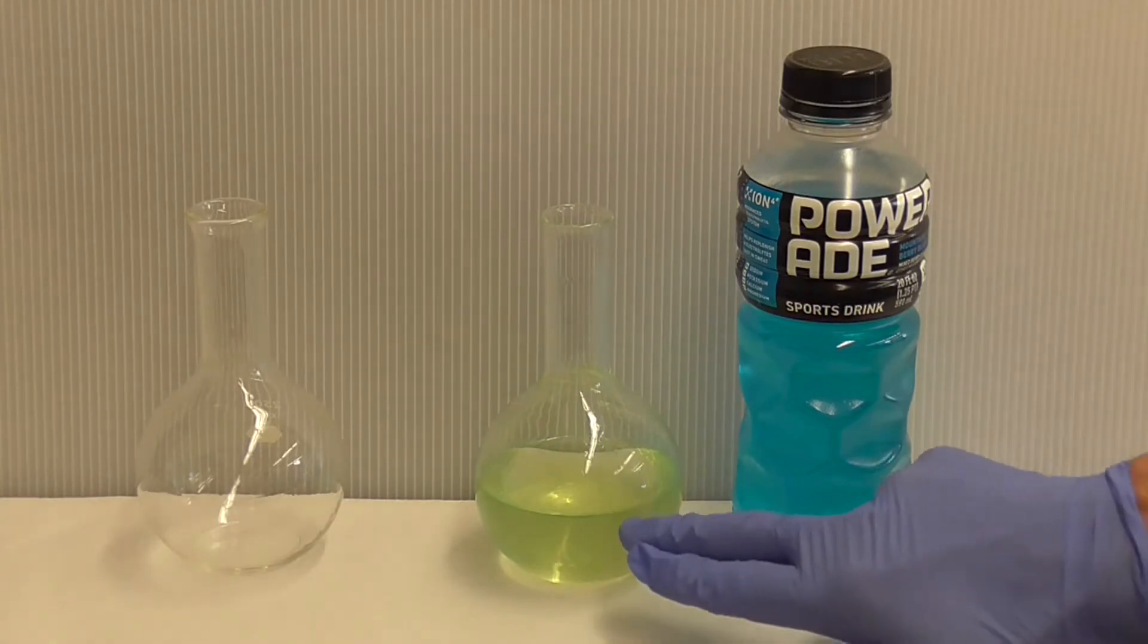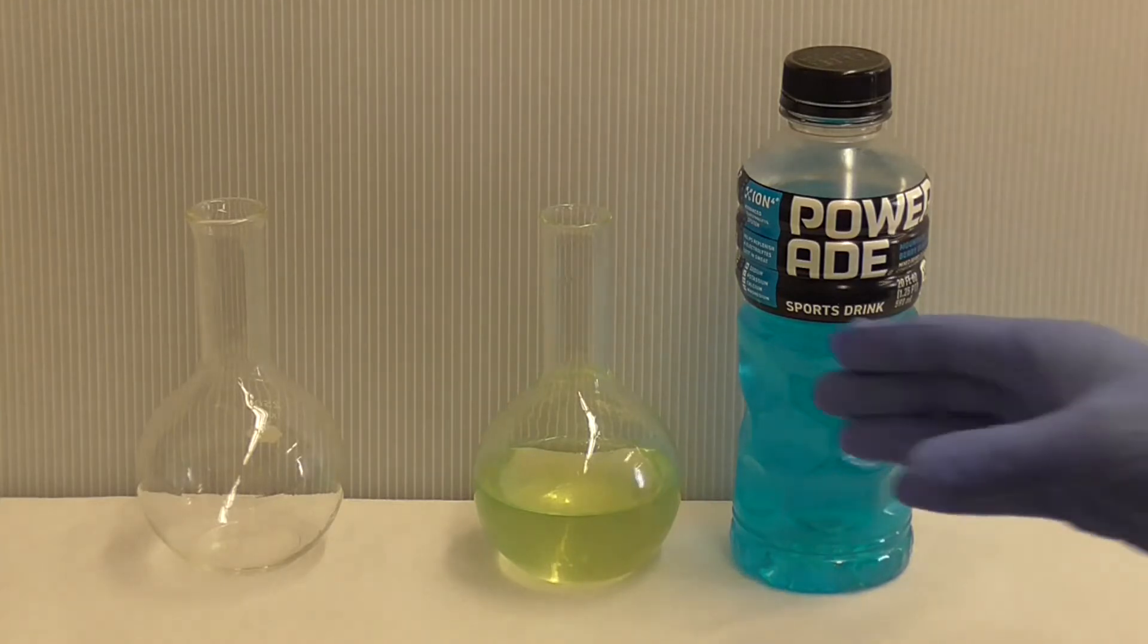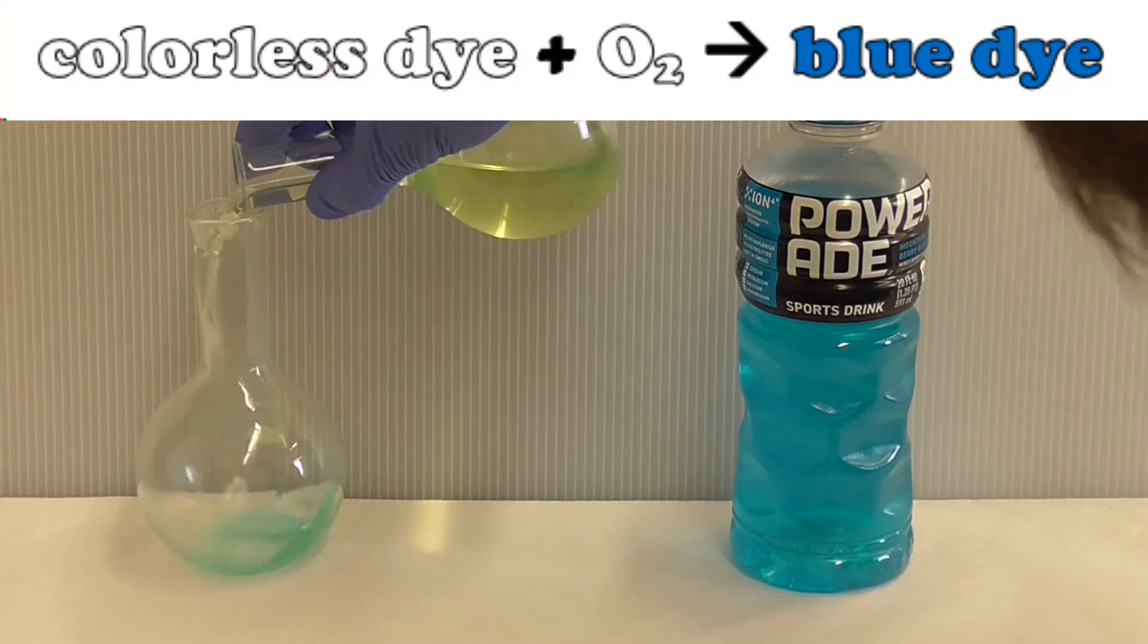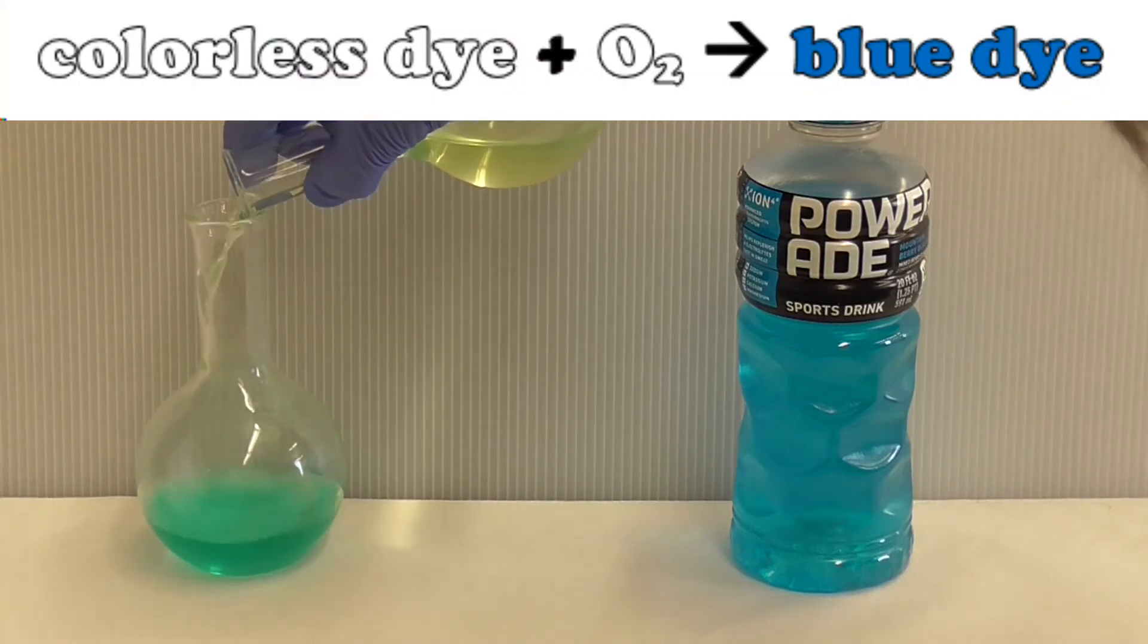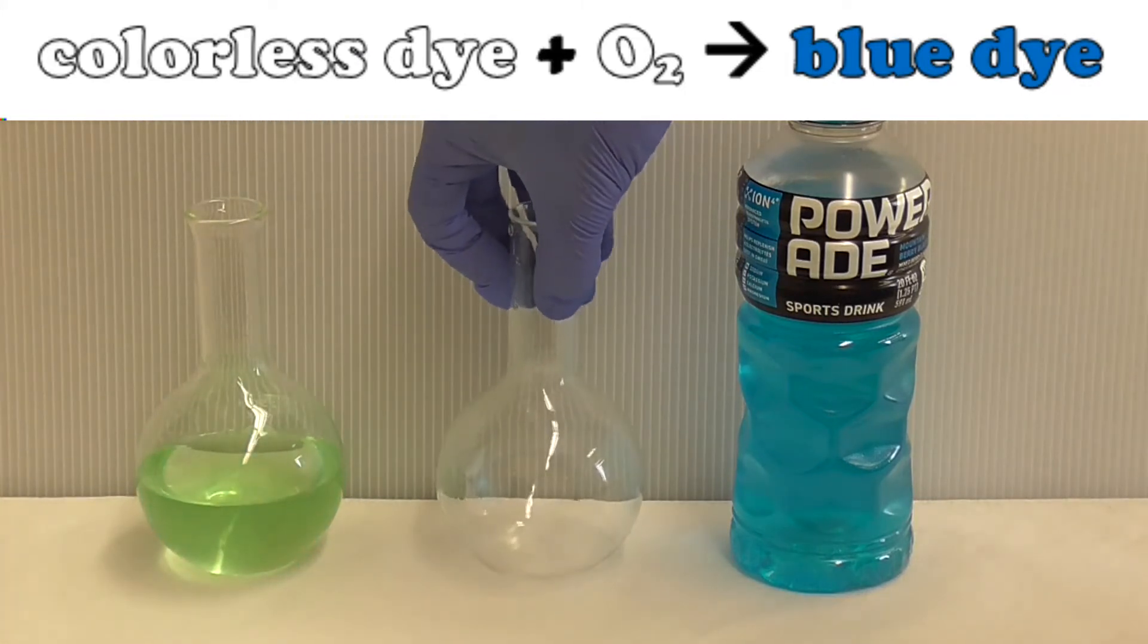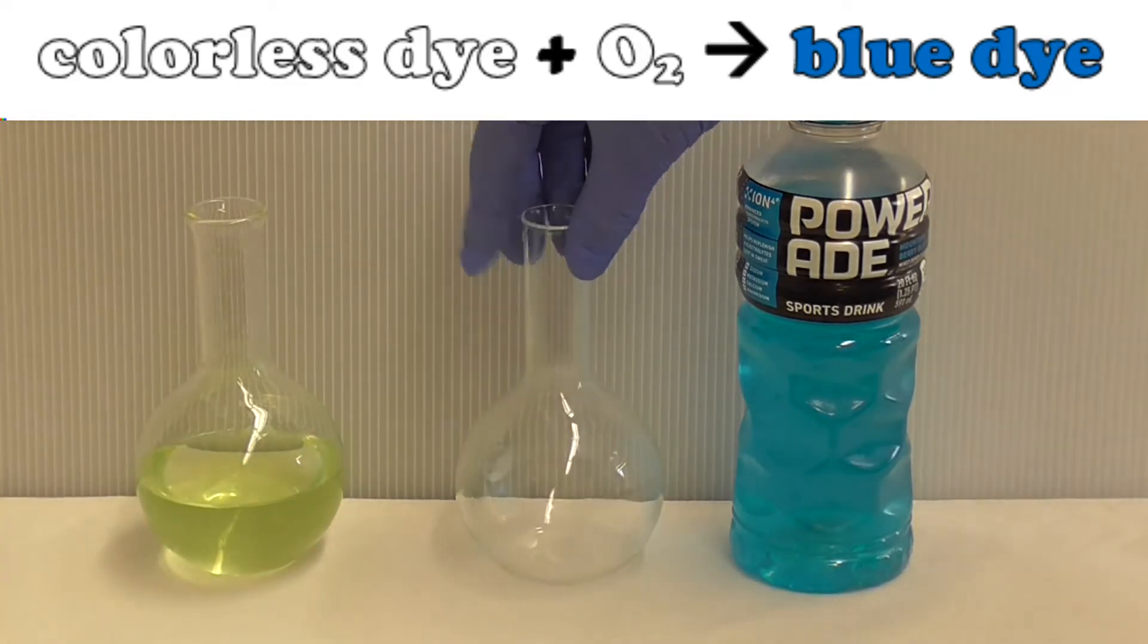Now if you notice right here at the top you may be able to see a faint blue color, and that faint blue color is a clue as to how we regenerate the blue color, the blue form of the dye. You see when I take this bottle and I pour it into this one over here, oxygen from the atmosphere gets mixed into the solution. And the oxygen oxidizes the colorless form of the blue dye back to the blue form of the blue dye. And that's why you get the flash of blue.